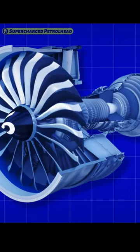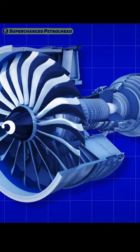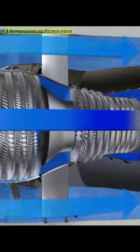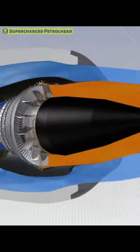The fan: the turbofan engine also has a fan located at the front of the engine. The fan sucks in air and mixes it with the exhaust gases, providing additional thrust.